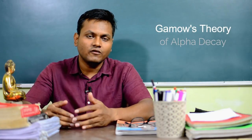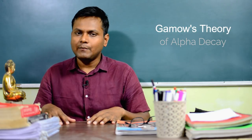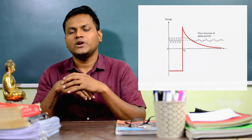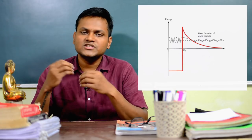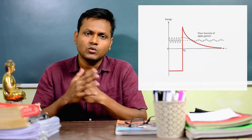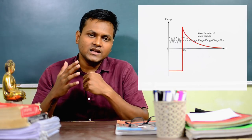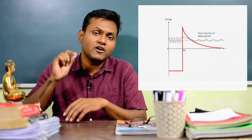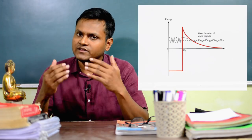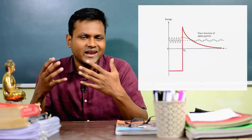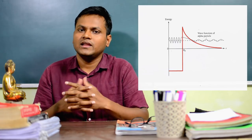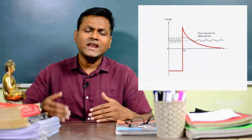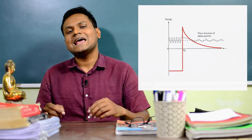This is essentially how alpha decay happens — through quantum tunneling. This idea was first stated by George Gamow in Gamow's theory of alpha decay. In this theory, the alpha particle is assumed to exist independently inside the nuclear walls, constantly moving and colliding with the nuclear wall. Every time it collides, there is a small probability of tunneling through the barrier, even though the barrier is about 2.5 times greater than the maximum energy the alpha particle can possess. When such tunneling happens, an alpha decay occurs.